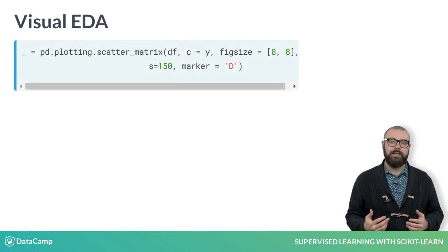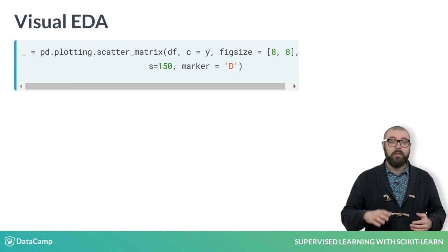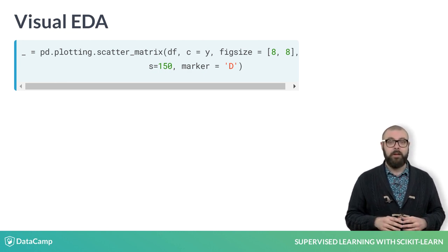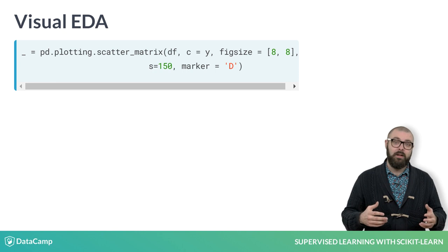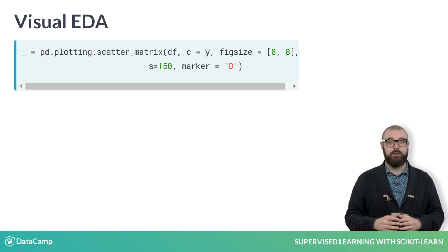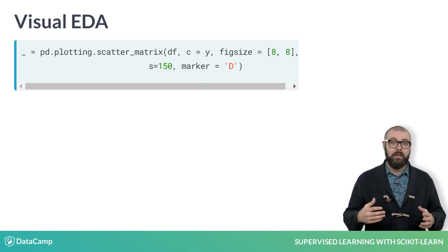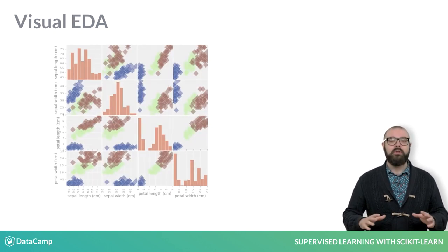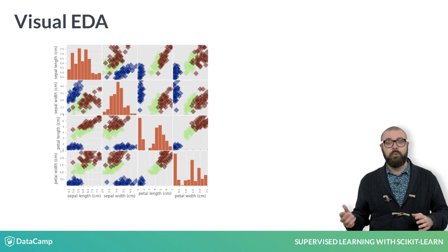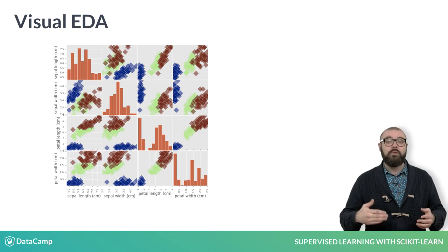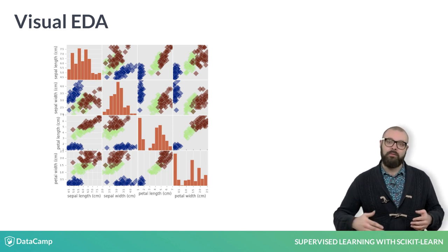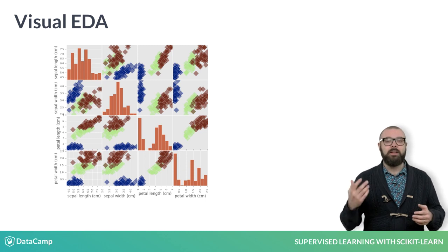Now, we'll do a bit of visual EDA. We use the pandas function scatter_matrix to visualize our dataset. We pass it our DataFrame, along with our target variable as argument to the parameter C, which stands for color, ensuring that our data points will be colored by their species. We also pass a list to fig_size, which specifies the size of our figure, as well as a marker size and shape. The result is a matrix of figures, which on the diagonal are histograms of the features corresponding to the row and column.